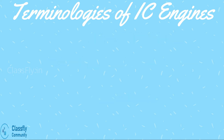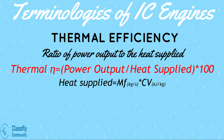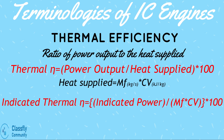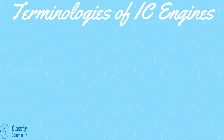Thermal efficiency is defined as the ratio of power output to the heat supplied, where heat supplied is the product of the mass of fuel and its calorific value. There are two types: indicated thermal efficiency, which is the ratio of indicated power to heat supplied, and brake thermal efficiency, which is the ratio of brake power to heat supplied.